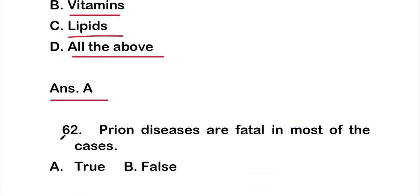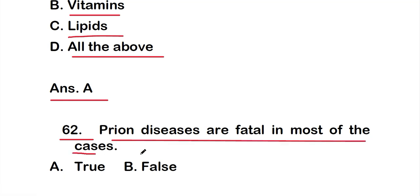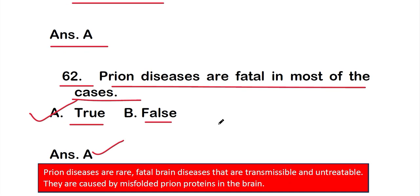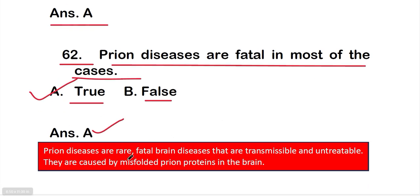Question 62: Prion diseases are fatal in most cases — option A: true, option B: false. The right answer is option A. It is true that prion diseases are fatal in most cases. Prion diseases are rare, fatal brain diseases that are transmissible and untreatable.